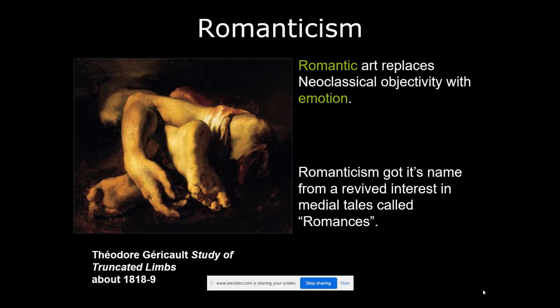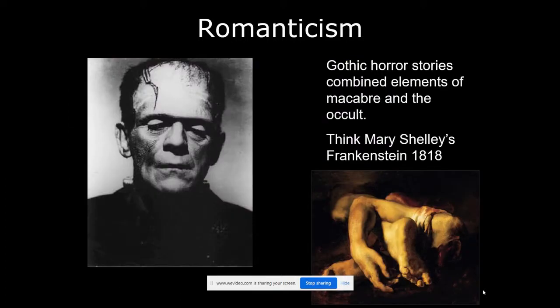Romanticism is the next thing we're going to look at in the evolution of art history. It comes after the neoclassical period and replaces neoclassical objectivity with emotion. This is all about romance — not kissy-kissy romance — it gets its name from medieval tales called romances, more like gothic horror stories like Mary Shelley's Frankenstein.